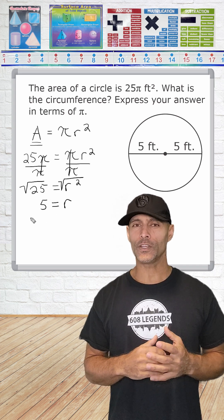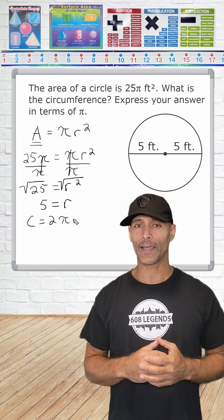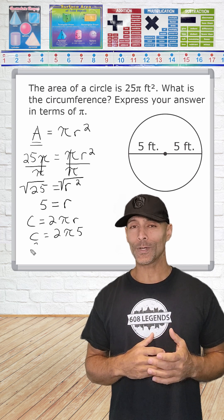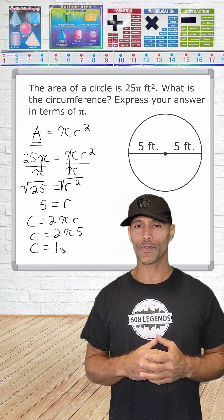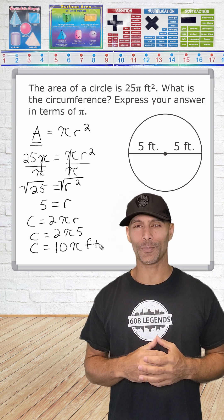To find the circumference, we're going to use the formula C is equal to 2πr and substitute 5 in for r. This gives us C is equal to 2π times 5, which can be simplified to circumference is equal to 10π, which is the circumference of the circle in terms of π.